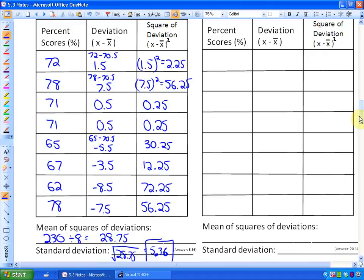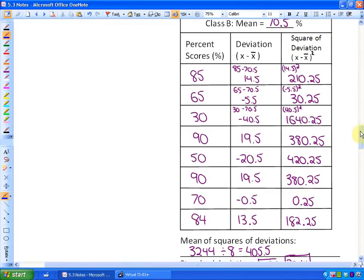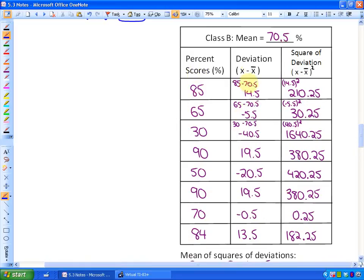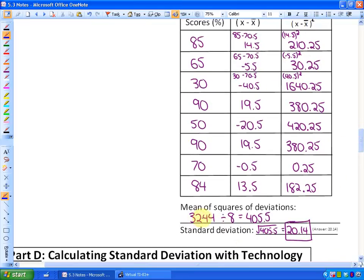Okay, I hope you've tried it on your own. We're going to show you exactly what you should have had for class B. It's right below. You put all the percent scores, you found out their distance from the mean, you squared them all, and after you squared them all, you summed that up. When I summed those squares, I got 3,244 divided by 8 and got the average. Then I took the square root and got that the standard deviation was 20.14, which is much greater than class A because class B was much more scattered. So a high standard deviation means that they're not that consistent. In the next lesson, we're going to look at how we can use technology to calculate standard deviation.